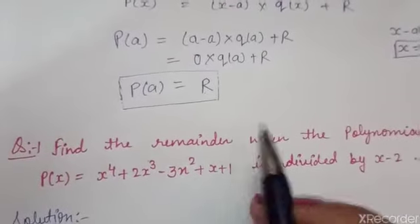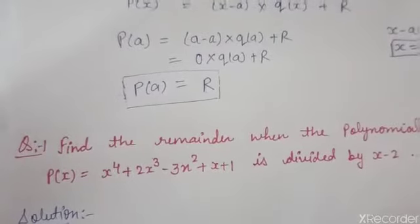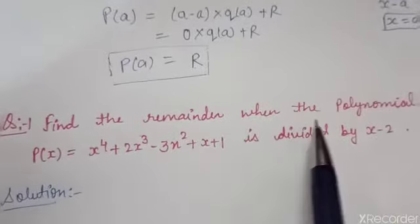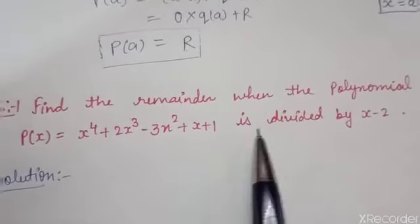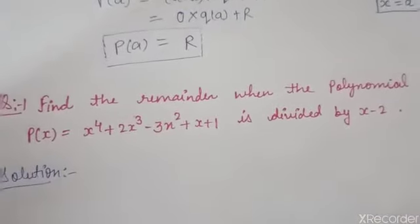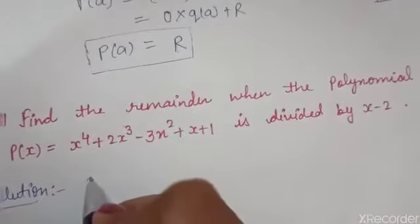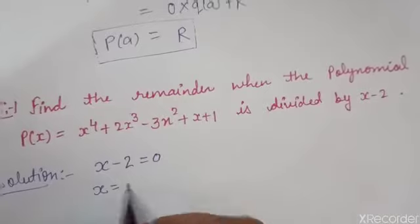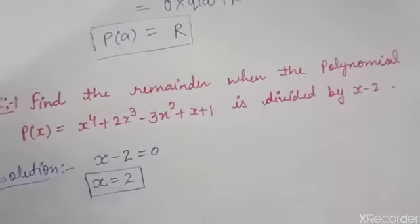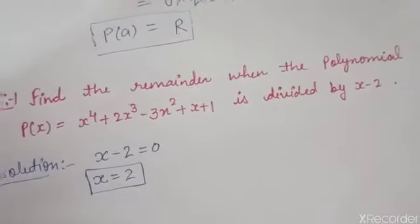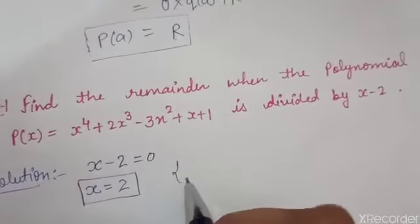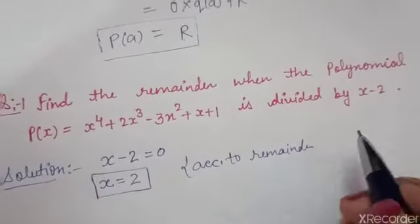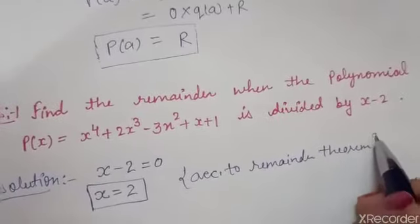With the help of this statement, we can easily find the remainder of any given polynomial. Let's solve some sums. Find the remainder when the polynomial P of X is divided by X minus 2. Firstly, we equate the divisor equal to 0 according to the concept of the remainder theorem, so we get the zero of the divisor. Here we get X equal to 2.